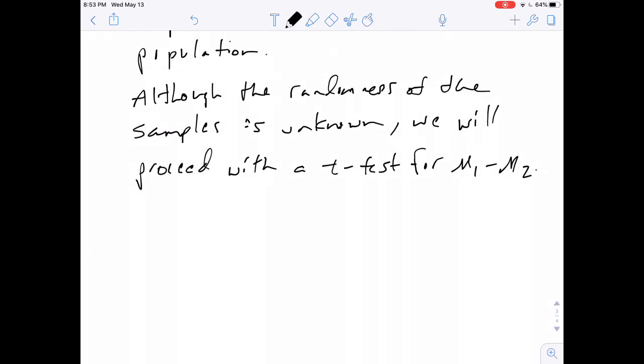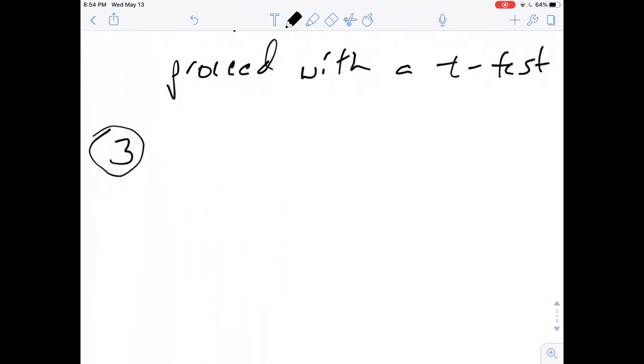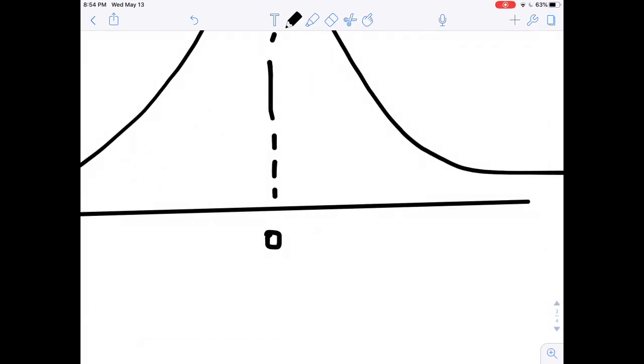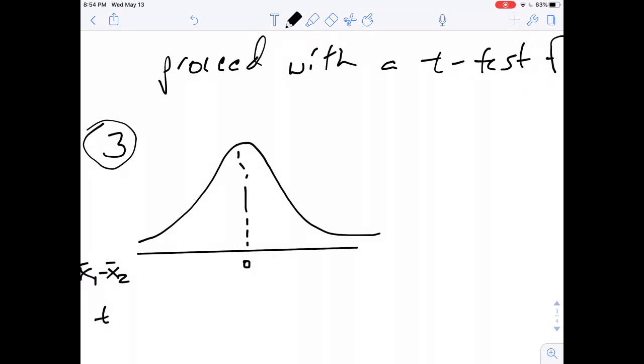So what we're going to do now for step three where we actually carry out the test, this is more where we do the math. We need a picture, a test statistic which is a t in this case, and then a p-value. So I'm going to start with the picture. We're going to use this t-distribution, and this is going to be the x-bar 1 minus x-bar 2 axis. Underneath that is the t-axis. This is going to be centered at 0, that's at my null hypothesis. We're going to assume that that difference would be 0.